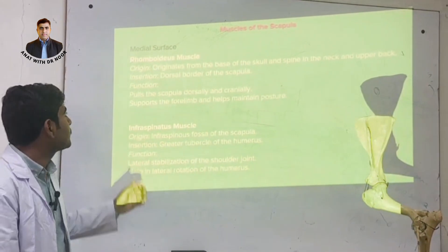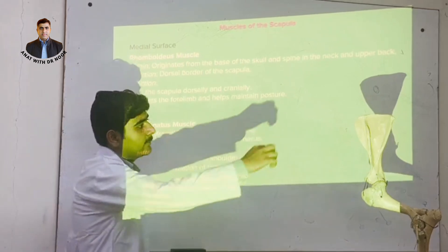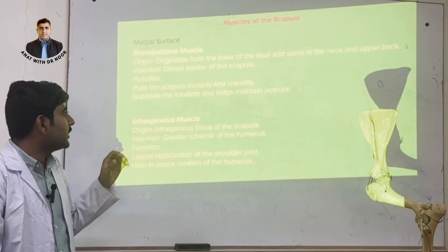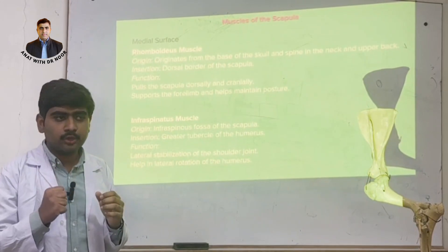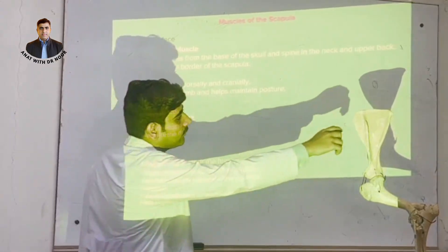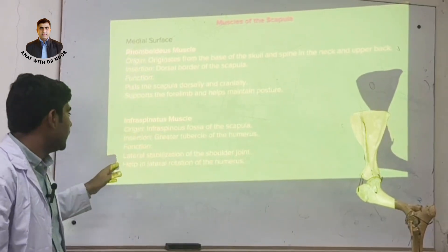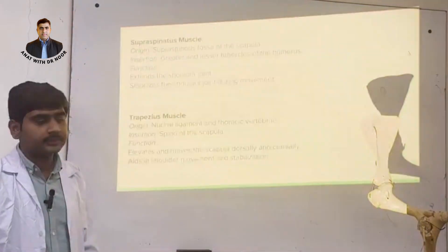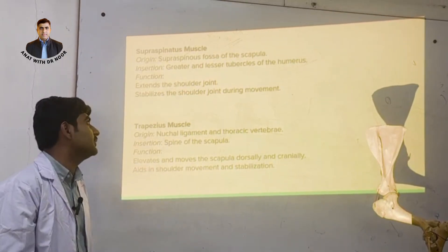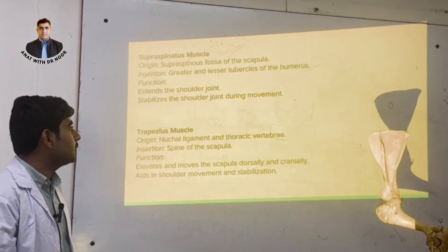Muscles of the scapula: on the medial surface, the rhomboid muscles originate from the base of the skull, spine of the neck and upper back. Their function is to pull the scapula dorsally and cranially, support the forelimb, and help in absorbing shock. The infraspinatus muscle originates from the infraspinous fossa, inserts at the greater tubercle of the humerus, and functions to assist in lateral rotation of the humerus, extend the shoulder joint, and stabilize the shoulder joint during movement.